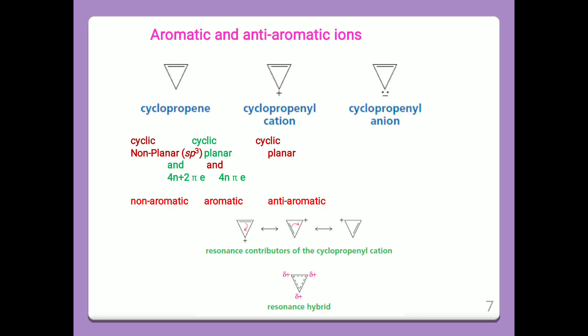Aromatic and anti-aromatic ions. Some examples: cyclopropene, cyclopropenyl cation, and cyclopropenyl anion. The first one is non-planar with sp3 hybridization — one carbon atom has sp3 hybridization, making it a non-aromatic compound. The second, cyclopropenyl cation, is cyclic, planar, and has 4n+2 pi electrons — it is aromatic. The third one is anti-aromatic. Resonance contributors to the cyclopropenyl cation are shown pictorially.